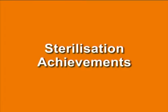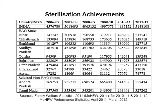Sterilization achievements: Table 7 shows that Madhya Pradesh and Jharkhand have made a substantial improvement in sterilization performance since 2006–07. Bihar has also shown improvement in performance. UP, on the other hand, despite having a high unmet need for limiting methods, has shown no improvement in performance.